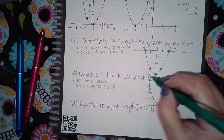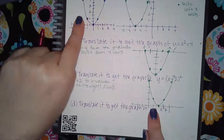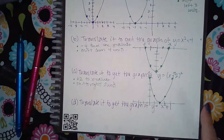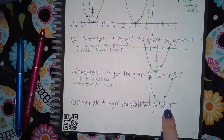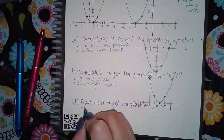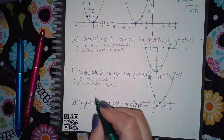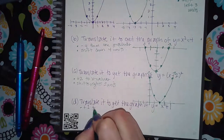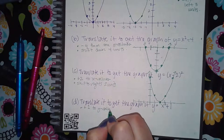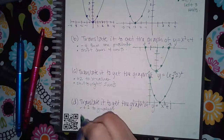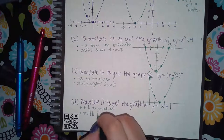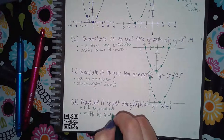Again, it's the same parabola just shifted to the right two units. The last case: what happens if there's a plus outside the square? That means you're going to add one to the y values, which is going to make it shift up one unit.